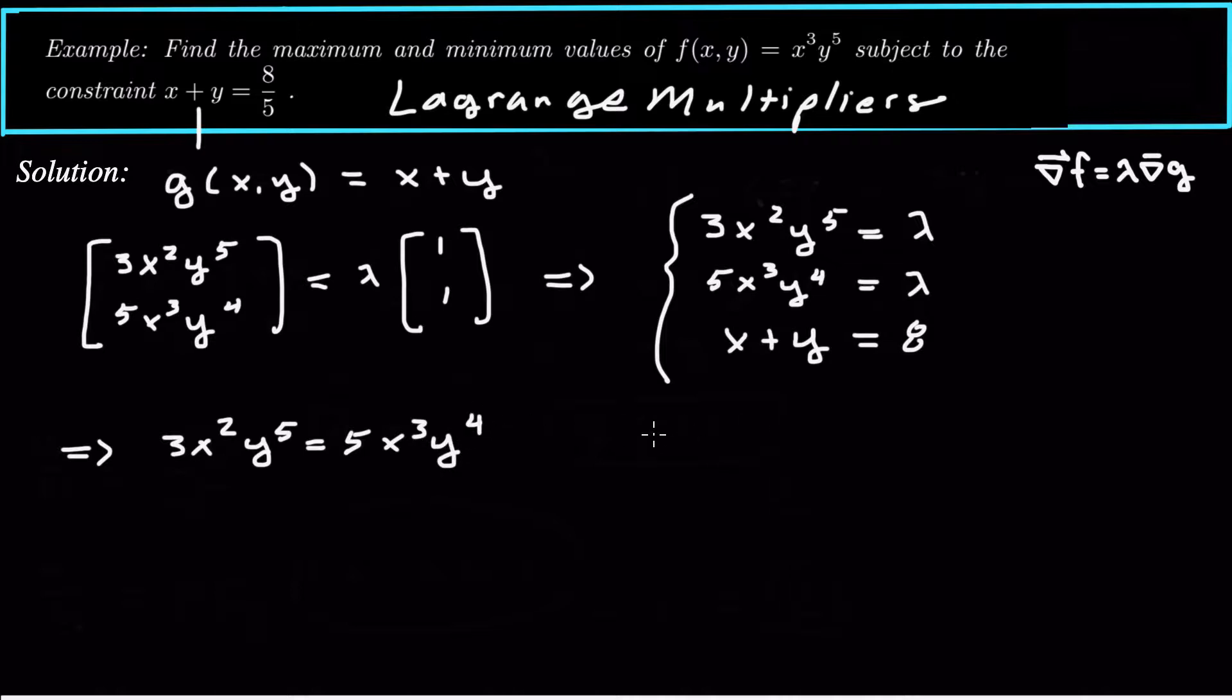Now, this should be 8 fifths right here. There are a couple of things that could happen in this equation. This equation could be true if x is 0, so the first thing that could happen is maybe x equals 0. The second thing that could happen is maybe y equals 0, and then that equation would be true. Now, what most people would have done originally is just cancel out x squared on both sides and cancel out y to the 4th on both sides. But you can't do that if x is 0 or if y is 0.